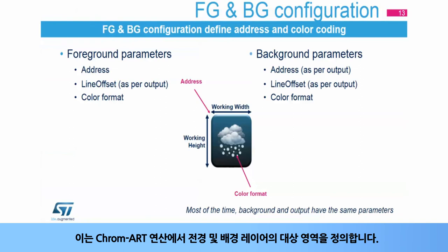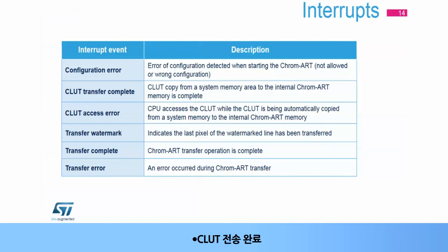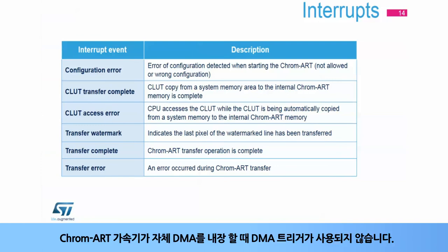This defines which area of the foreground and background layers are targeted by the Chrom-ART operations. The Chrom-ART Accelerator has six interrupt sources to signal: configuration errors, CLUT transfer complete, CLUT access error, watermark reach during a transfer, transfer complete, and transfer error. No DMA trigger is used, as the Chrom-ART Accelerator embeds its own DMA.